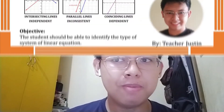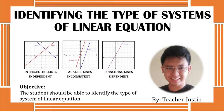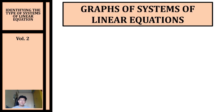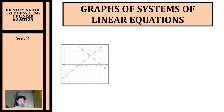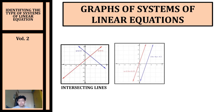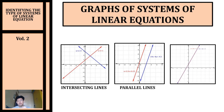Good day everyone, welcome to Math with Teacher Justin. On today's topic we're going to talk about identifying the types of systems of linear equations. We can identify the types of a system of linear equations using their graph. In graphing systems of linear equations, we can encounter the following: intersecting lines, parallel lines, or coinciding lines.